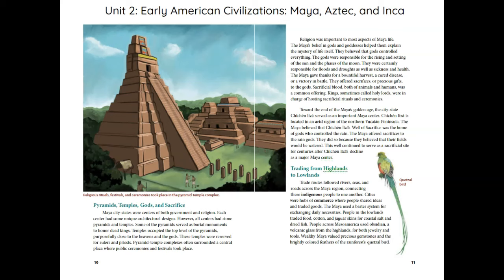Trading from Highlands to Lowlands: Trade routes followed rivers, seas, and roads across the Maya region, connecting these indigenous people to one another. Cities were hubs of commerce, where people shared ideas and traded goods. The Maya used a barter system for exchanging daily necessities. People in the lowlands traded food, cotton, and jaguar skins for coastal salt and dried fish. People across Mesoamerica used obsidian, a volcanic glass from the highlands, for both jewelry and tools. Wealthy Maya valued precious gemstones and the brightly colored feathers of the rainforest's quetzal bird.